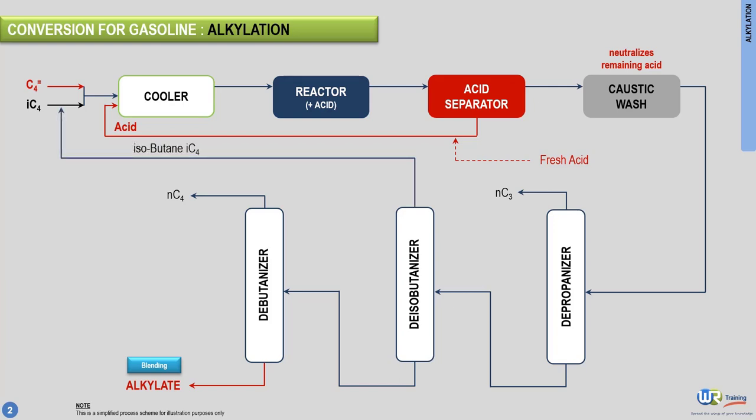So this was a simplified overview of the alkylation process used in petroleum refineries to maximize the production volume of gasoline. In the next video, we will discuss the catalytic reforming process, another conversion unit used for gasoline.